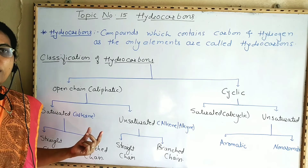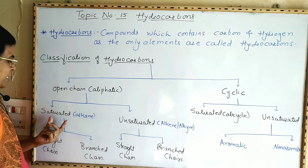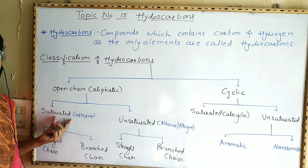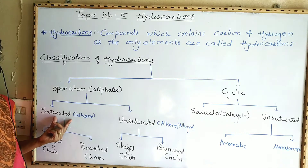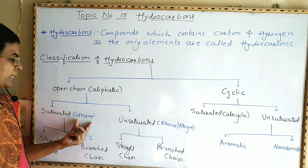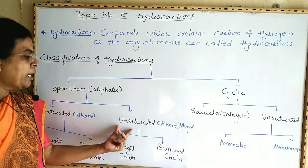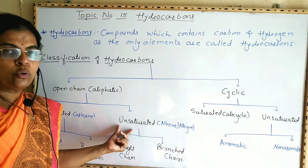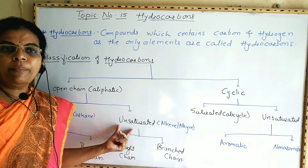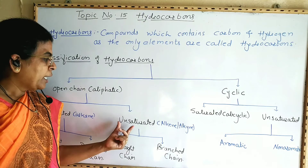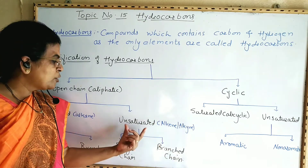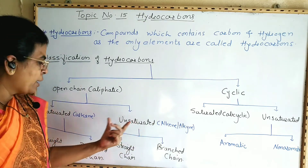The hydrocarbons which possess carbon-carbon single bond in the molecule are called saturated hydrocarbons — for example, alkanes. Unsaturated hydrocarbons are those which possess carbon-carbon double and triple bond in the molecule; that is, alkenes and alkynes are the examples of unsaturated hydrocarbons.